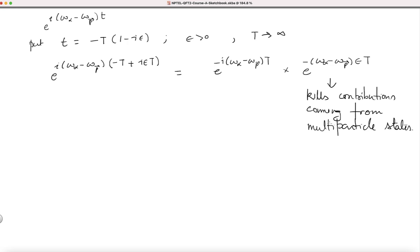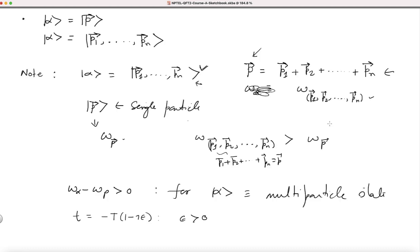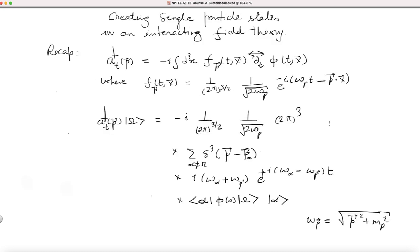That is very nice because now the vacuum contribution is out, multi-particle states are out, and only single-particle states are left. So in this sum over alpha, the vacuum is killed and all multi-particle states are killed — what is left is only single-particle states.